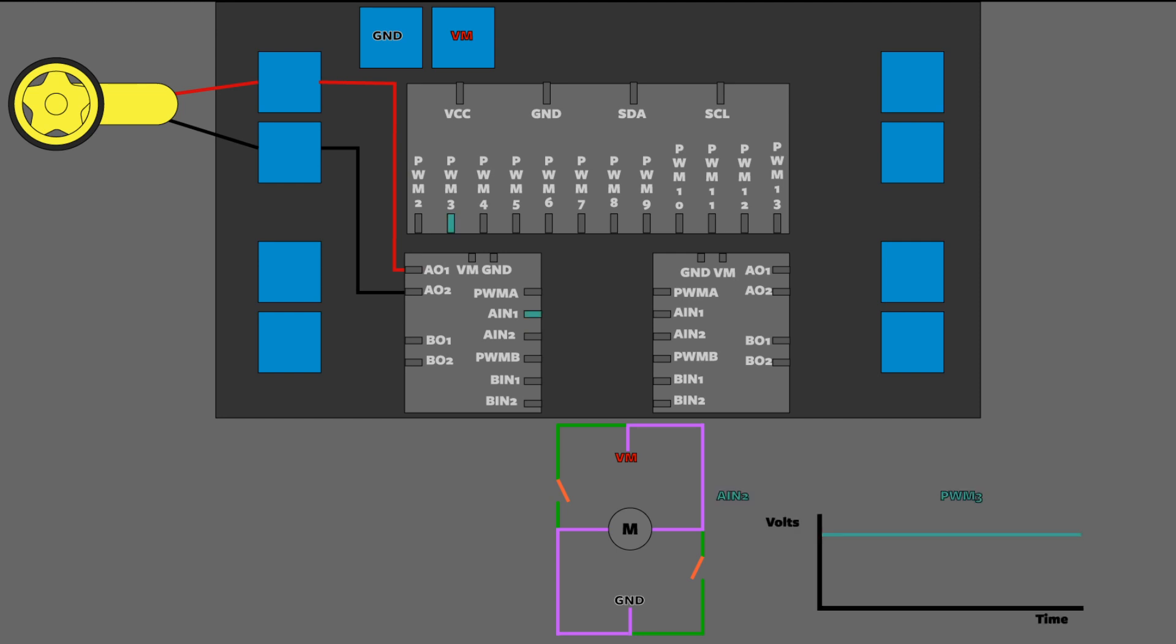You can have PWM3 drive A in 2 high and we have PWM4 set A in 1 low and the opposite side of the circuit is completed. And now A02 is high and A01 is low and this changes the direction that our motor is spinning.